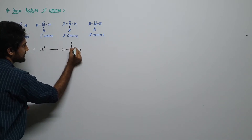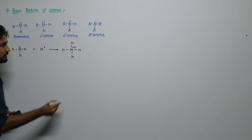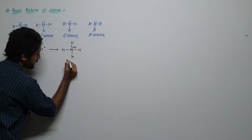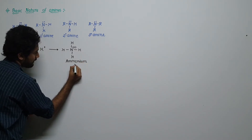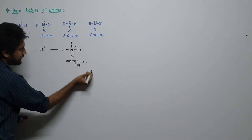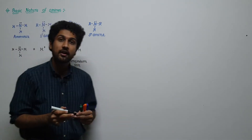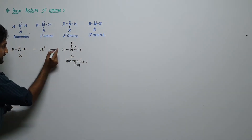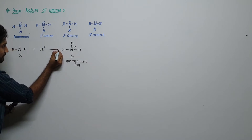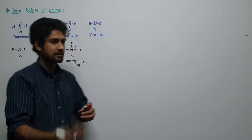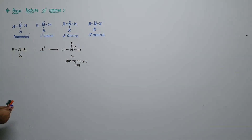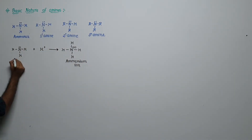Nitrogen has a positive charge in the ammonium ion. This happens because nitrogen donates its electrons to H+, i.e., it accepts H+. That means ammonia is a Lewis base.